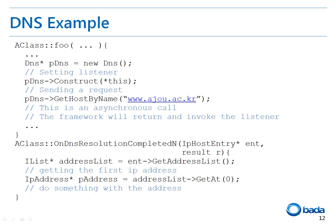Let's have a look at an example. In the foo function, the DNS is created and the DNS lookup request is sent. I created the DNS class and constructed the DNS object by setting the listener. If you set the host name by calling the GetHostByName function, the OnDNSResolutionCompletedN function of the listener object is called. If you call the GetAddressList function of the IPHost entry, you can get the address list in the IList format. Then you can get the first IP address by calling the GetAt function of the list.